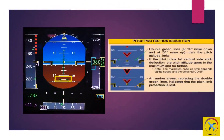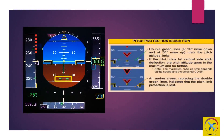Pitch protection indication on the primary flight display shows double green lines at 15 degrees nose down and at 30 degrees nose up, marking its pitch attitude limits. If the pilot holds full vertical side stick deflection, the pitch attitude goes to the maximum and no further. The maximum nose up limit depends on speed and the selected configuration. An amber cross replacing the double green lines indicates that pitch limit protection is lost.